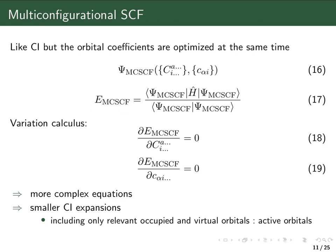The basic expansion of the MCSCF wave function is precisely the same as in configuration-interaction: a linear combination of Slater determinants built from some orbitals. The energy is calculated as the usual expectation value and minimized by optimizing the coefficients. But while in CI we only varied the coefficients in front of the Slater determinants, in MCSCF we also simultaneously vary the molecular orbital coefficients. The resulting equations are more complex, so one cannot have as large CI expansions as in standard CI.